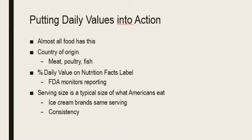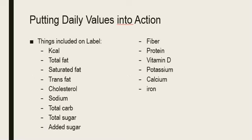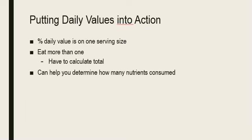The serving size listed on the Nutrition Facts Label reflects what a typical American would eat. There is consistency among foods — for example, ice cream brands must have the same serving size so consumers can compare products. The Nutrition Facts Label must include: calories, total fat, saturated fat, trans fat, cholesterol, sodium, total carbohydrates, total sugar, added sugar (something new added recently), fiber, protein, vitamin D, potassium, calcium, and iron. The percent daily value is based on one serving size. If you consume more than one serving, you must add to the percent daily value — this can be very helpful in determining how many nutrients and calories are consumed.